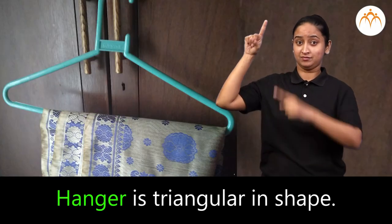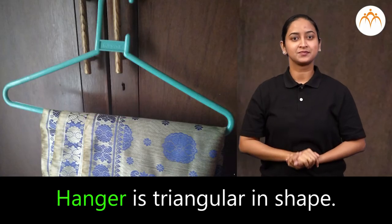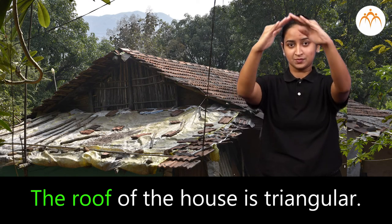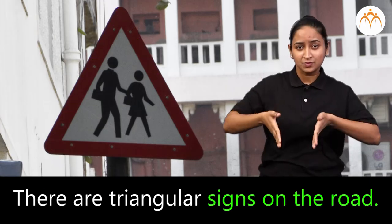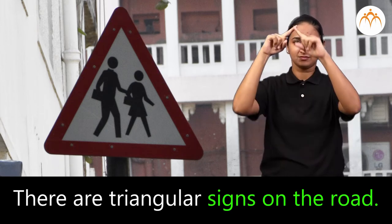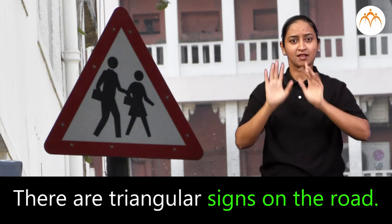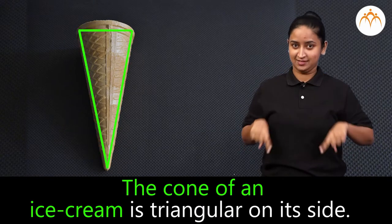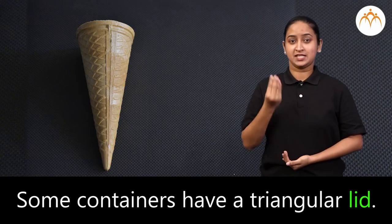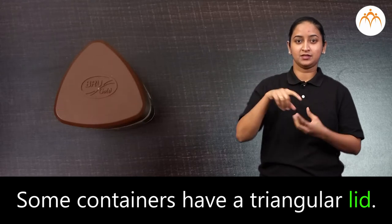Hanger is triangular in shape. The roof of the house is triangular. There are triangular signs on the road. The cone of an ice cream is triangular on its side. Some containers have triangular lids.